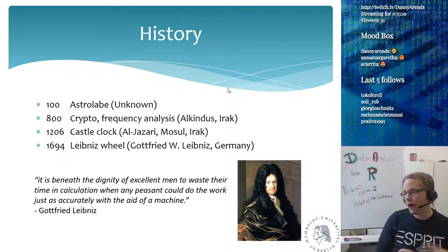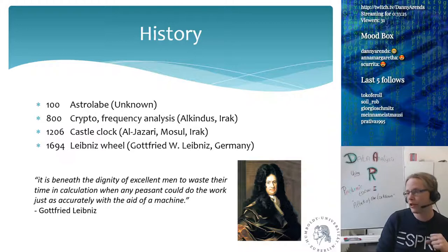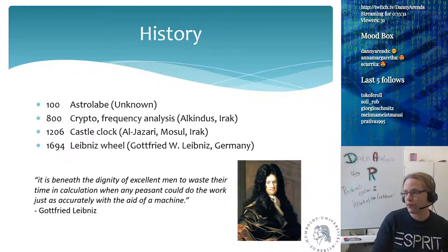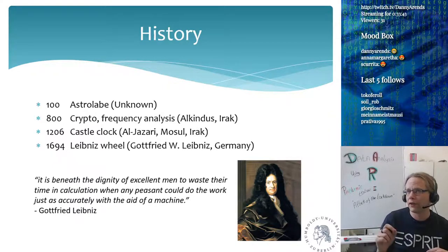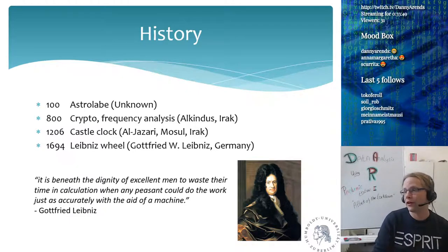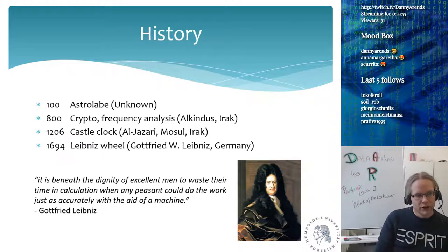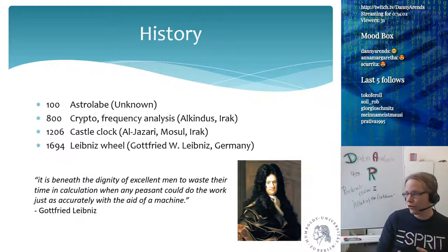In 100 AD we had the Astrolabe, a development of the Antikythera mechanism and a commonly used tool. People doing nautical work still train on an Astrolabe today — you point it at the sun, the North Star, or the Polar Star, and combined with knowing the time, you can figure out where you are on the planet. In 800 AD, the first big breakthrough was frequency analysis, developed by Alkindus from Iraq.